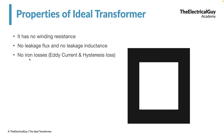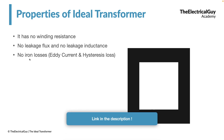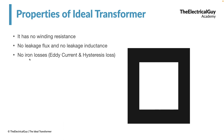The third property is related to the core: it has no iron losses. Iron losses consist of eddy current loss and hysteresis loss. These losses are present in a practical transformer, but in the ideal transformer the core is loss-free — it will not have any sort of iron losses.